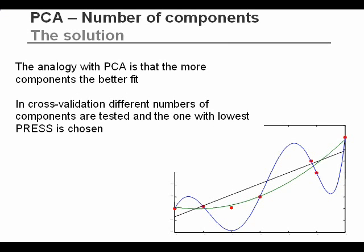In PCA, we do exactly the same. We fit a one-component model in cross-validation, leaving out samples and seeing how well the PCA model predicts them. We do a two-component model, and if that model has a lower fit, well then we say the two-component model is better. Usually the first local minimum is chosen as the correct number of components, but sometimes it's not that simple to see exactly how many components to use.